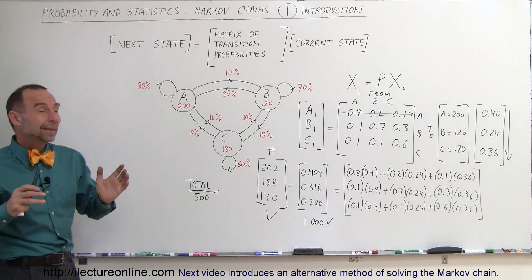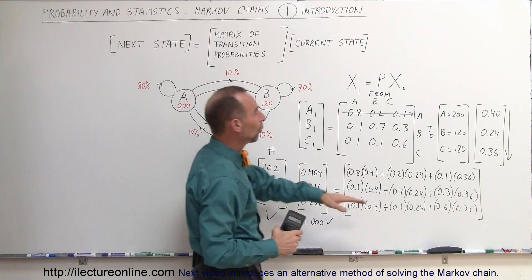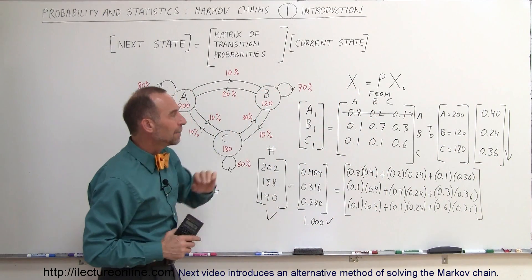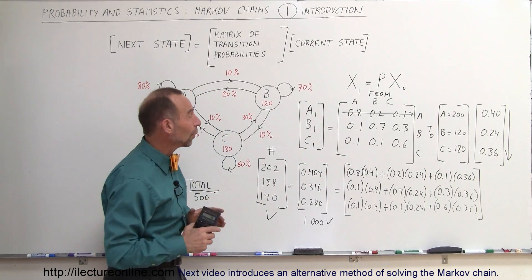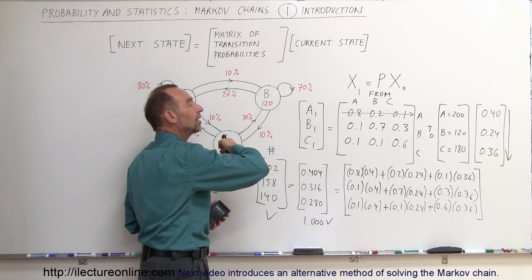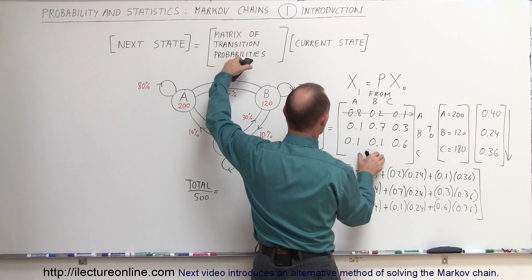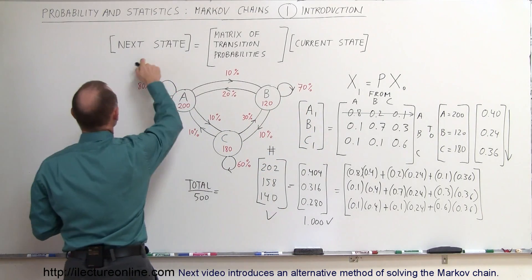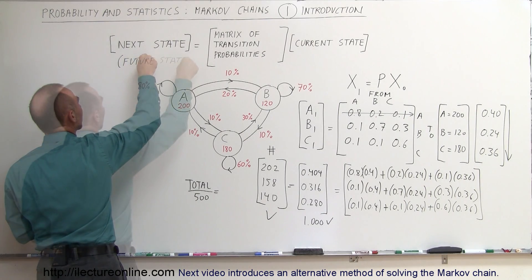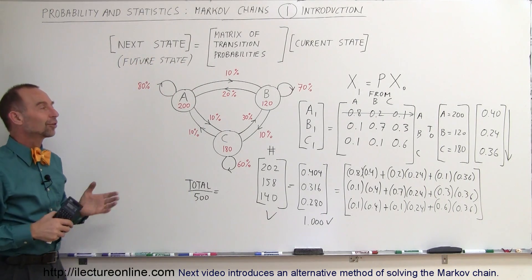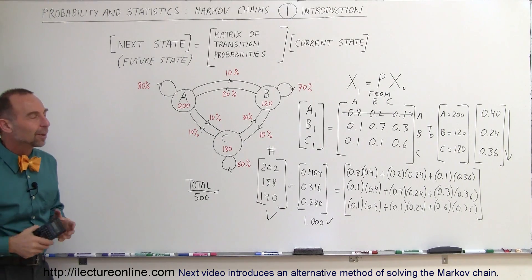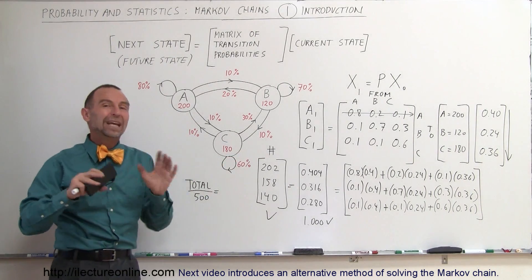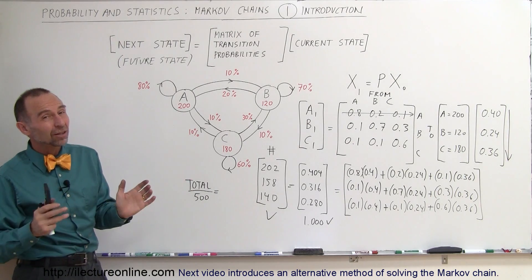That's how we use Markov chains at the beginning level. We have a current state telling us the number of customers in each store, a probability matrix showing how we think things will change over one week, and we multiply them to get the new state the following week. The matrix of transition probabilities multiplied by the current state matrix gives the future state matrix. There are lots more videos to come showing how Markov chains continue and converge, and I'll also show the different arrangement where the matrices are transposed — same methodology, just different notation.